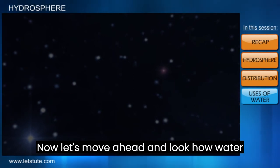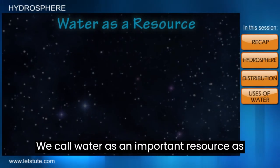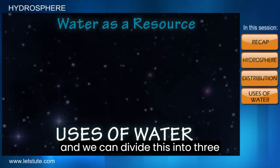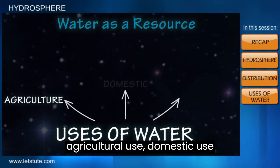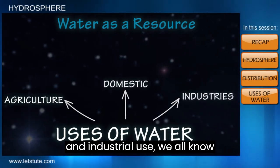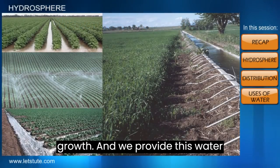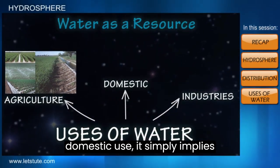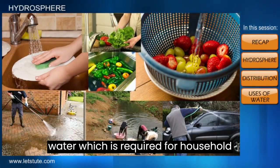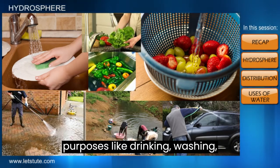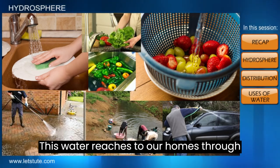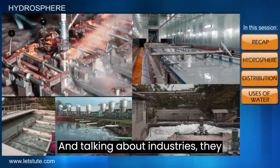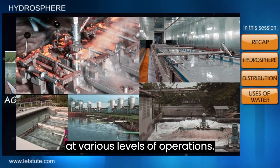Now let's look at how water acts as a resource to us. We call water an important resource as we use it for various purposes, which can be divided into three uses: agricultural use, domestic use, and industrial use. Crops require water for their growth, which we provide through proper irrigation. Domestic use implies water required for household purposes like drinking, washing, cooking, and watering plants. Industries require a huge amount of water at various levels of their operations.